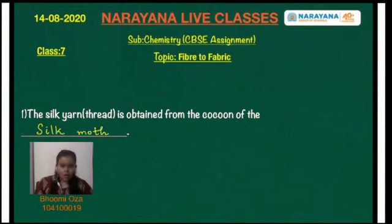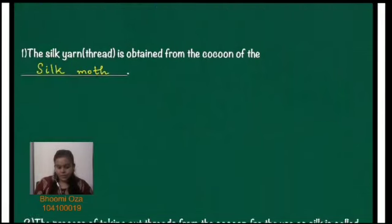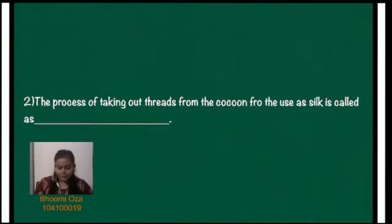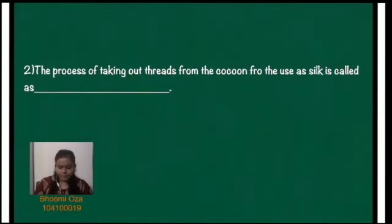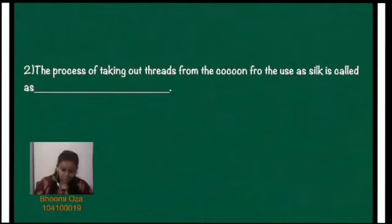Let us discuss the second question. The process of taking out threads from the cocoon for use as silk is called dash — so it is called reeling of silk.